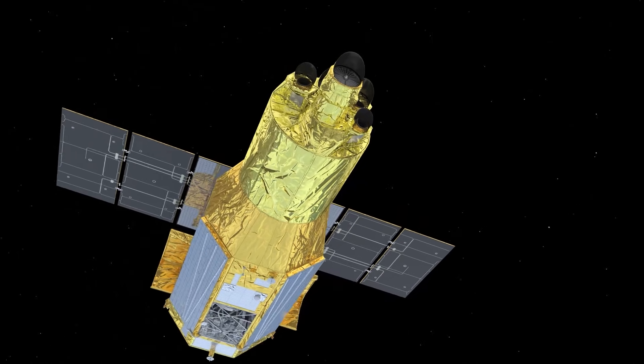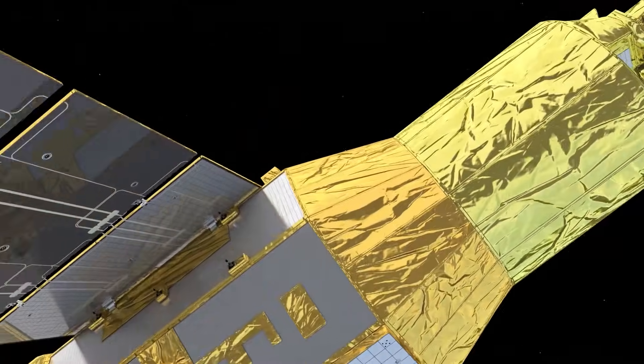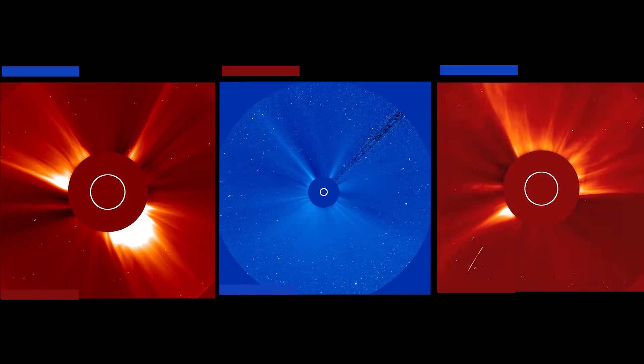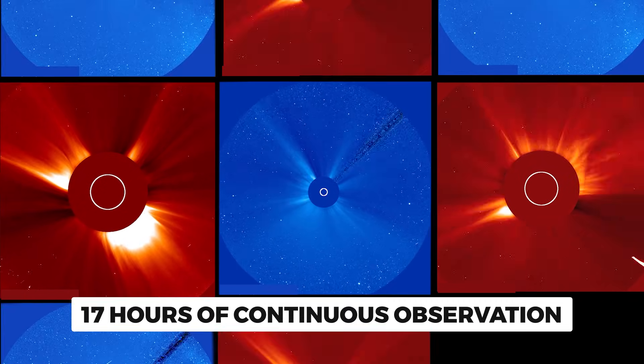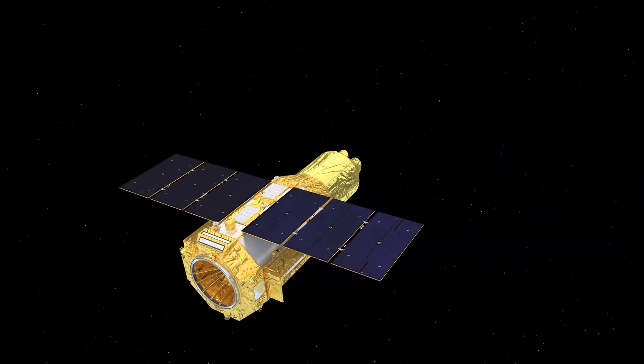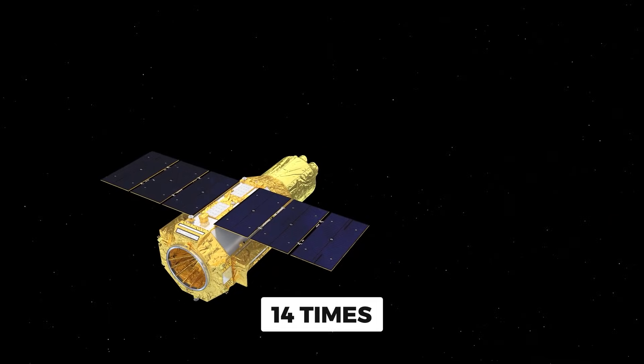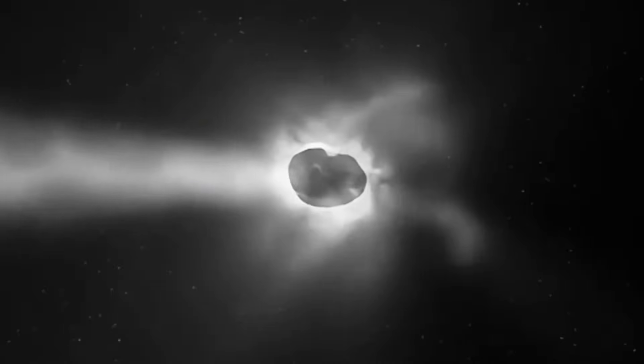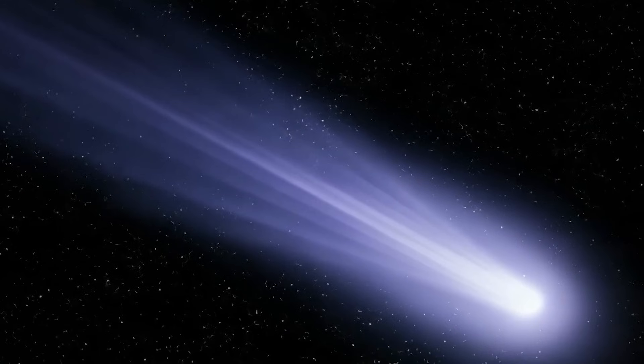Japan's XRISM observatory, that's the X-ray imaging and spectroscopy mission, locked onto 3I Atlas for 17 hours of continuous observation. The satellite had to adjust its position 14 times just to keep the comet centered in its field of view as it drifted across the constellation Virgo.